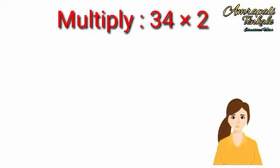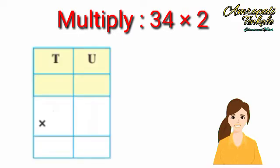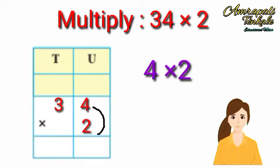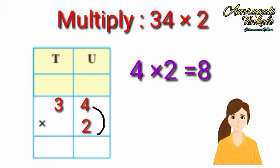Multiply 34 multiply by 2. Let's arrange in vertical arrangement. First, multiply the 4 in the unit's place by 2. Two 4s are 8. Hence, write 8 under the line in the unit's place.